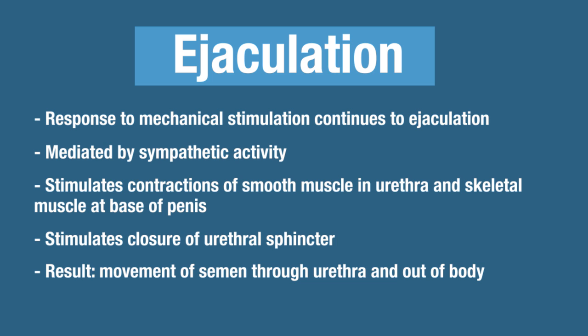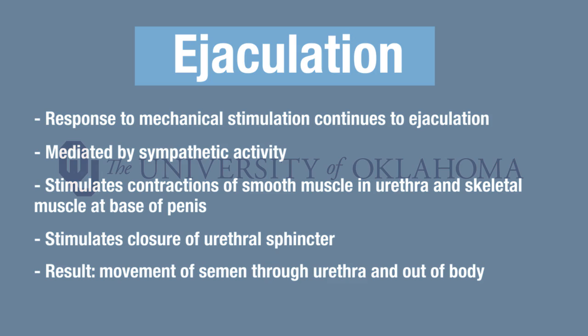One thing to think about: the sympathetic nervous system is stimulating closure of the urethral sphincter during ejaculation. Go back and look at micturition, which is urination, and consider what causes it. Compare that to ejaculation and think about why there is no urine mixed with semen. That concludes this part of the video.